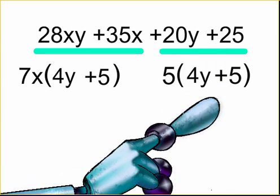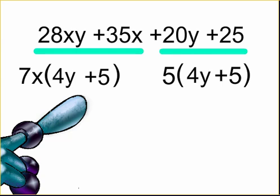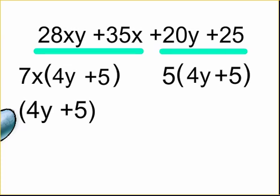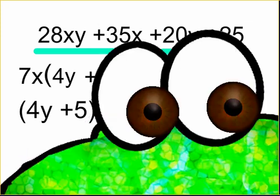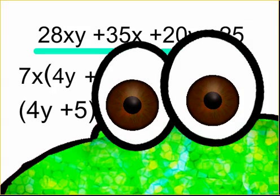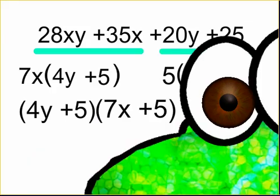We have a 4y plus 5 and a 4y plus 5 in parentheses, so we can factor 4y plus 5 out. We are then left with a 7x and a positive 5. So our answer is 4y plus 5 times 7x plus 5.